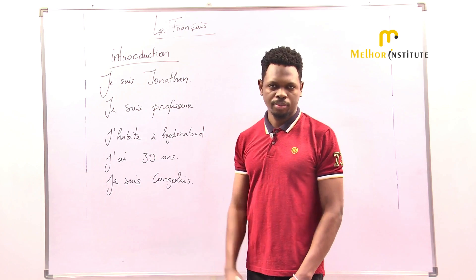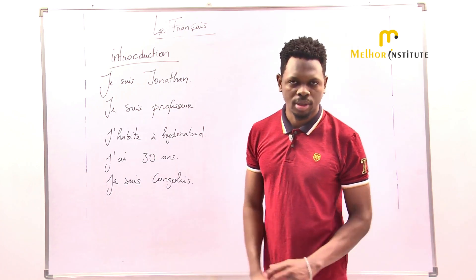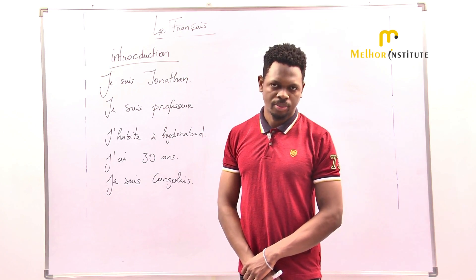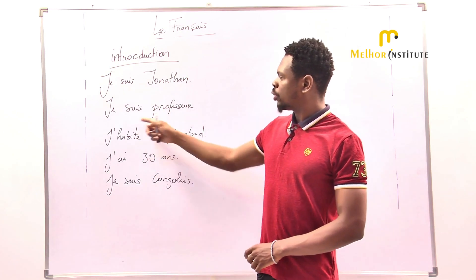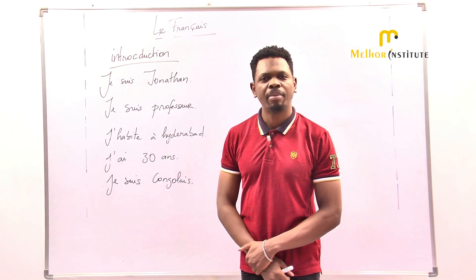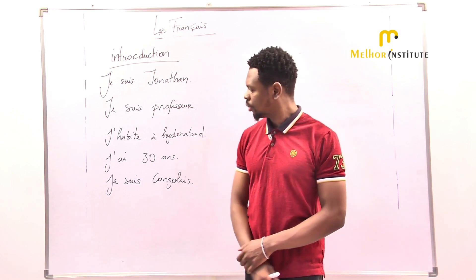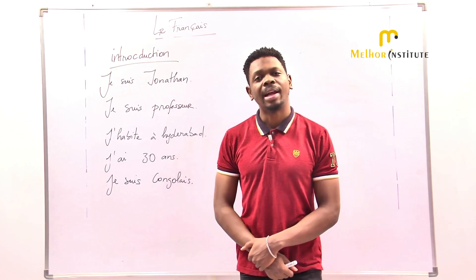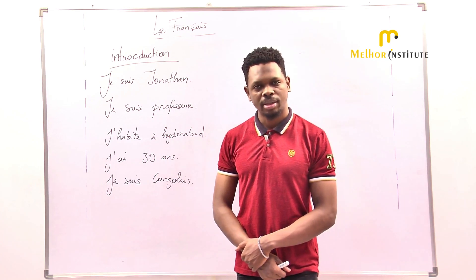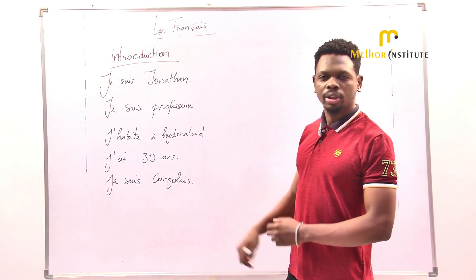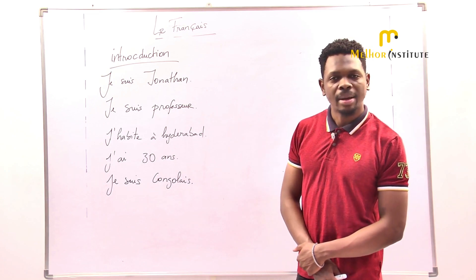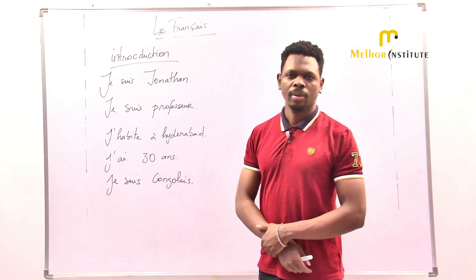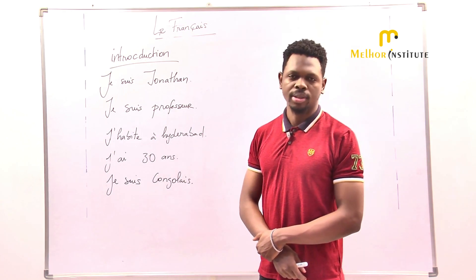Je suis Jonathan — it means I'm Jonathan. You can also say je m'appelle Jonathan. Je suis professeur — I am a professor. J'habite à Hyderabad — it means I live in Hyderabad. J'ai 30 ans — it means I'm 30 years old. Je suis Congolais — I am Congolese.